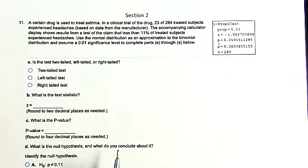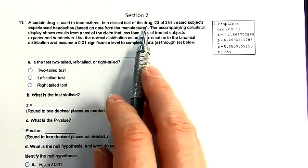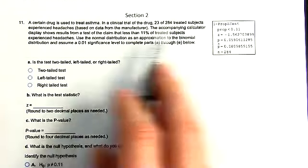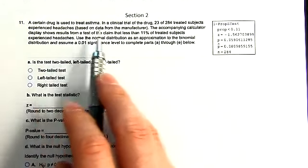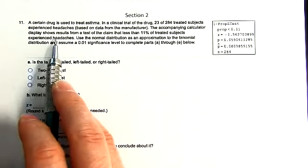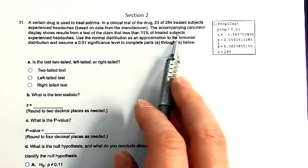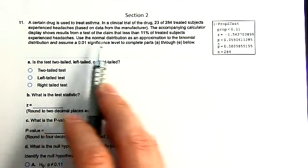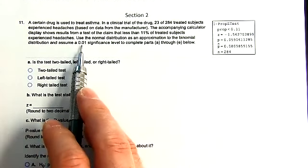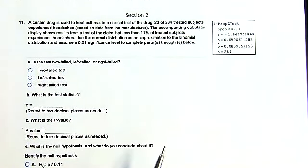Let's take a look at Question 11. A certain drug is used to treat asthma. In a clinical trial, the drug — 23 of 284 treated subjects experienced headaches based on data from the manufacturer. The accompanying calculator display shows results from a test of the claim that less than 11% of treated subjects experience headaches. Use the normal distribution as an approximation to the binomial distribution and assume a 0.01 significance level to complete parts A through E.